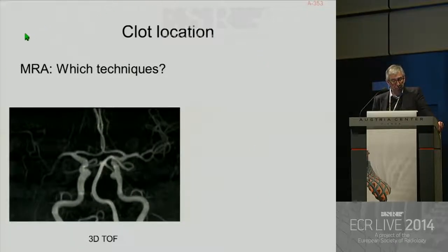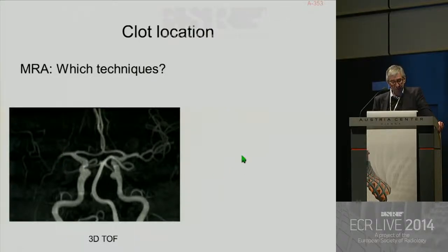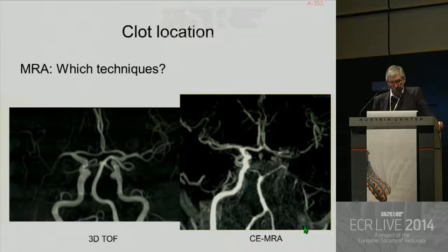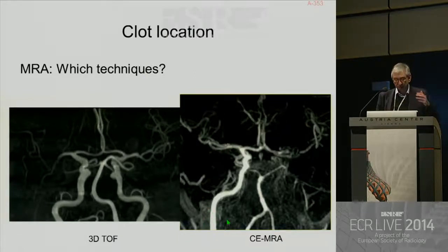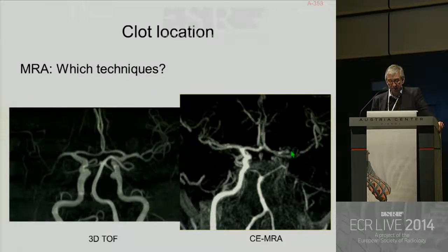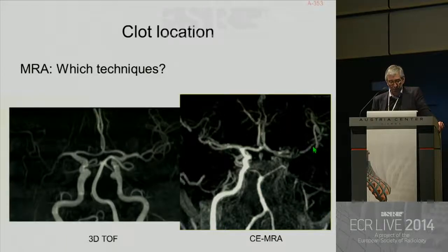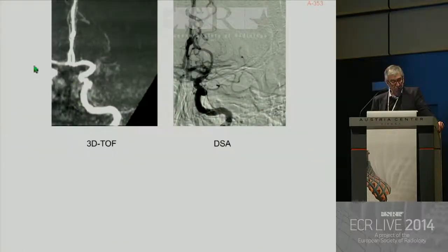Clot location is also important. We can use two MRA techniques: 3D TOF, which will show you the occlusion of the M1 segment, or also contrast-enhanced MRA. Contrast-enhanced MRA has a big advantage because it will also permit you to analyze the cervical vessels and also to analyze the distal circulation distal to the clot. So probably contrast MRA is more interesting compared to 3D TOF.